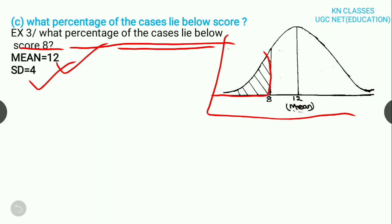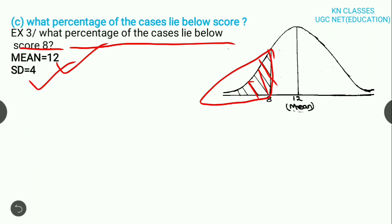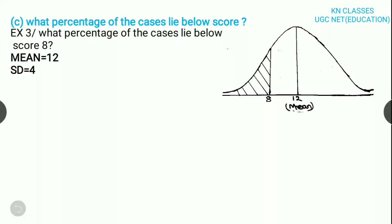The question has given that you need to find out how many cases will come from 8 to the bottom of this part. Did you understand the question? Now, let's see how we solve. You know that half of the curve is 50%. What do we need to find out? From the mean to the score of 8, we get this part of the curve. Then, we will minus it from 50. Our answer will come.